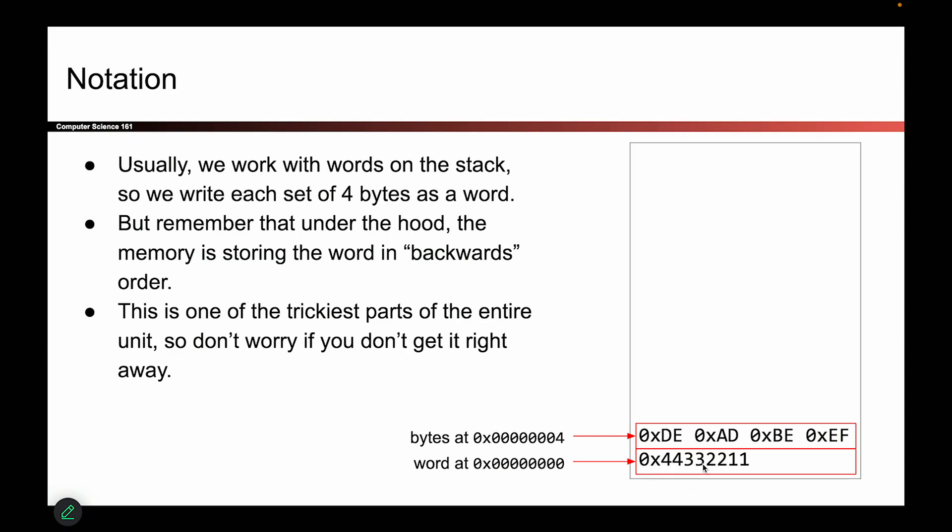OK. So finally, one final thing is, I guess I said the final earlier. This is the real final thing. Sometimes when people write words, they get lazy. And instead of writing 1-1, 2-2, 3-3, 4-4, and then reading it backwards, sometimes people will just write the word like this as shorthand. Just remember that under the hood in memory, the 1-1 gets stored at the lowest address, and then the 2-2, and then the 3-3, and then the 4-4. It is tricky, but I wanted to call it out so that we don't get confused.